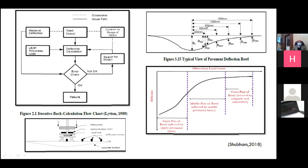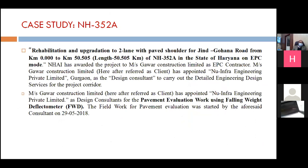The outer part of the deflection bowl gives some information; the middle part gives information; the inner part gives information about the pavement response to the impulse load. Now, for a clear step-by-step procedure, I have taken a case study of one national highway. This was the project with GAVA Constructions as EPC contractor — they appointed a firm to carry out pavement evaluation using FWD studies.